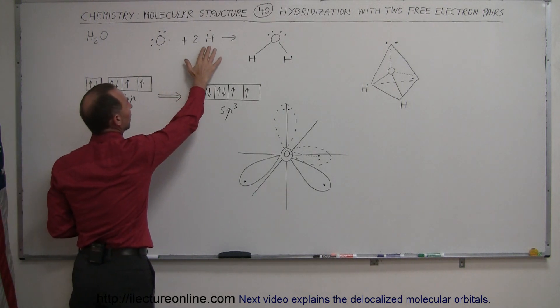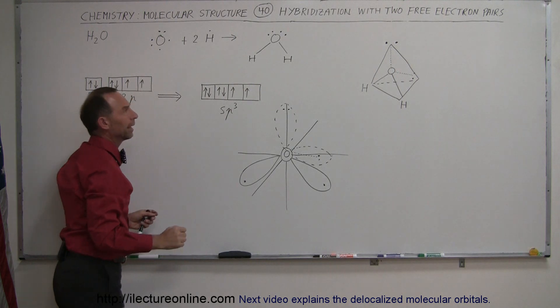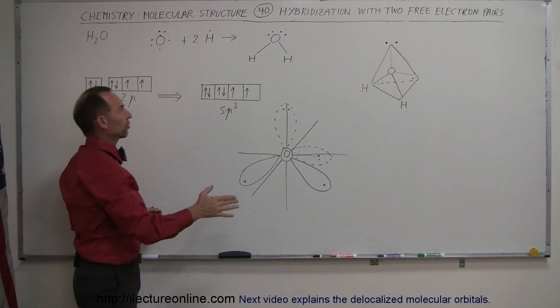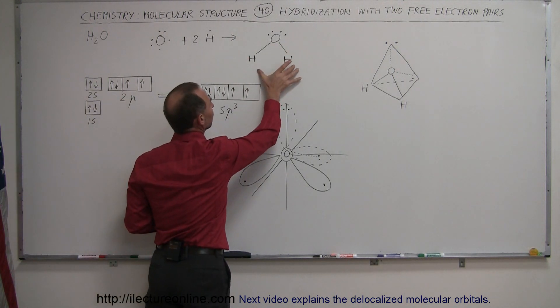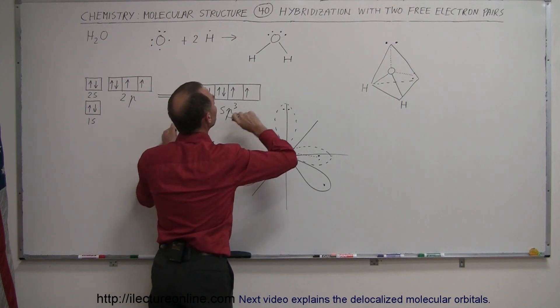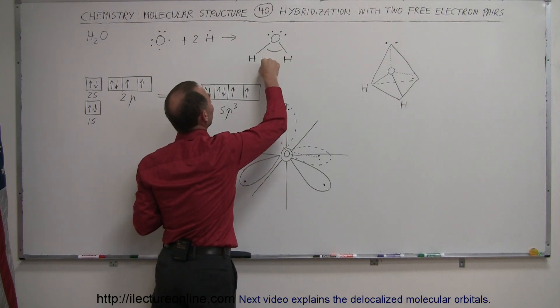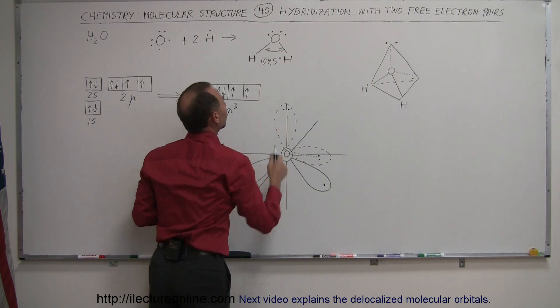And then we have two hydrogen atoms that combine into water. Typically, that's what we see in the Lewis structure: an oxygen with two hydrogens sticking out. The bond angle here is about 104.5 degrees, and then we have the two free electron pairs.